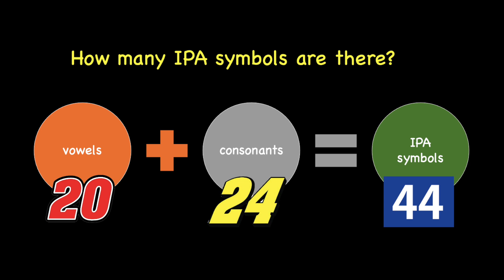Let's start with a pop quiz. In your opinion, how many IPA symbols are there? You must be thinking, there are 26 alphabets altogether, so there must be 26 sounds. I'm sorry, that is not true. IPA symbols are divided into vowels and consonants. We have 20 vowels altogether and also 24 consonants, and all this makes up 44 IPA symbols. Interesting, isn't it?